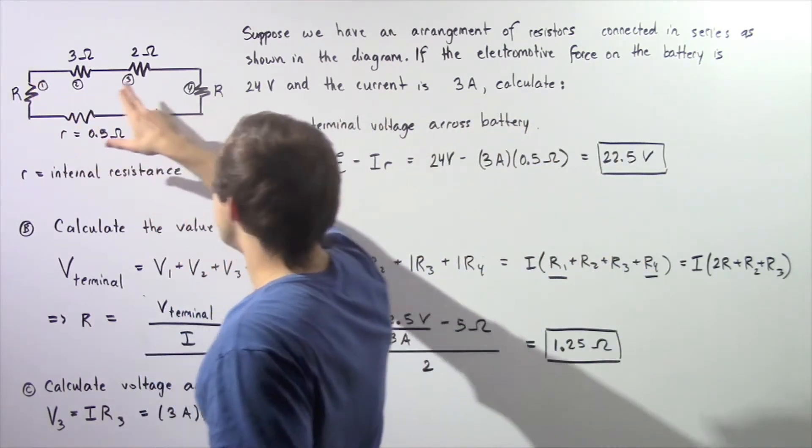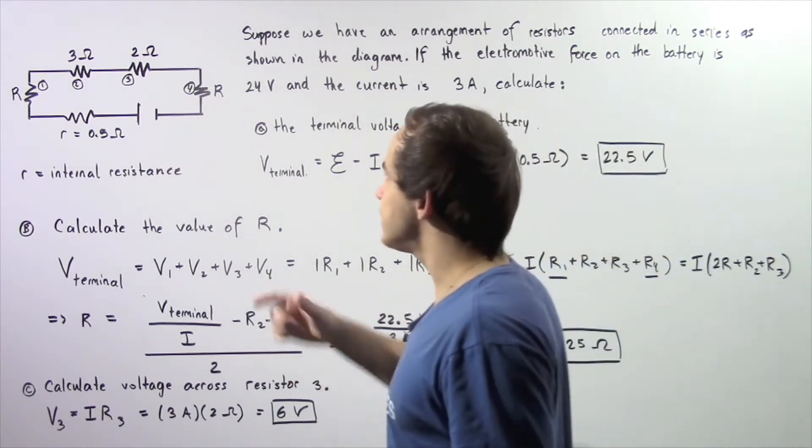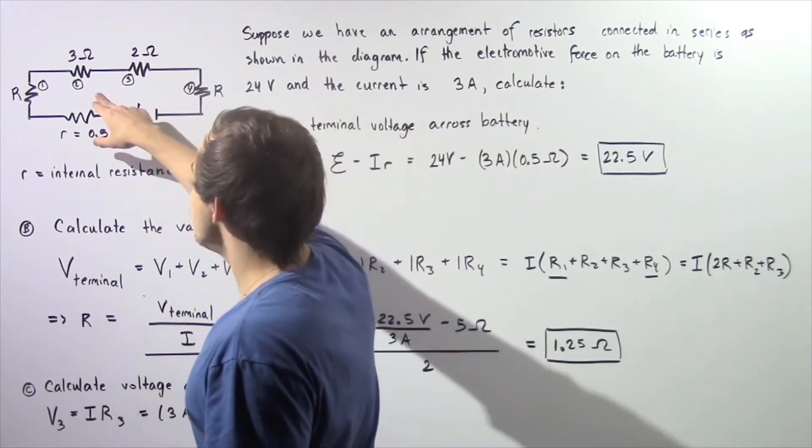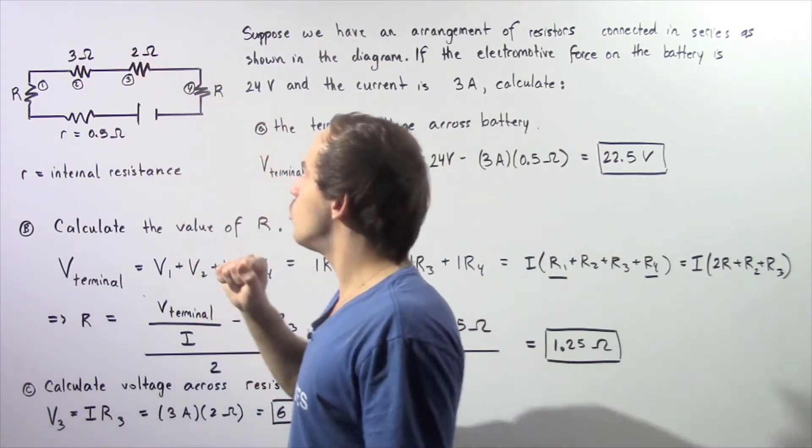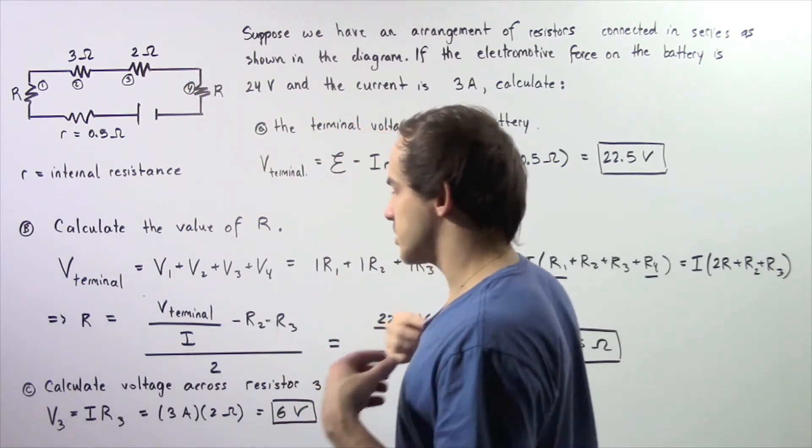So resistors number 1 and 4 have the same quantity of resistance given by uppercase R. Resistor number 2 has a resistance of 3 ohms and resistor number 3 has a resistance of 2 ohms.